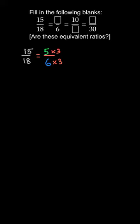Another way to check: denominator में 6 दिया है, तो इसे 6 से divide करो। अगर 6 से cancel किया तो 3 आएगा — 3 ऊपर और 3 नीचे — तो ऊपर भी 3 into 5 लिख सकते हैं। यहां से भी पता लग सकता है कि यह blank 5 से fill होगी। उसी तरह अगर 1st और 3rd fraction compare करना है।